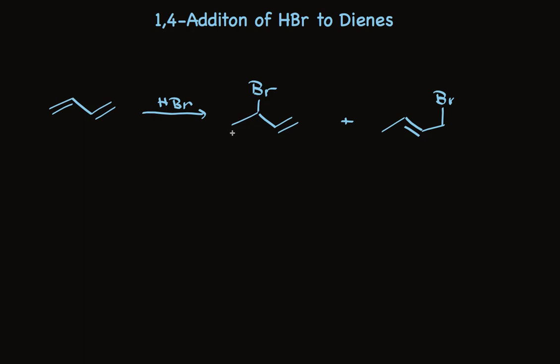Both of these products involve formation by addition of a proton to the terminal carbon of the 4-carbon pi system. So here's that proton that added. And for this product, it involves 1,2 addition. And here's the proton in this product, and the nucleophile is added at the other end, so it's called 1,4 addition, because it involves addition to the first and fourth carbons of the pi system.